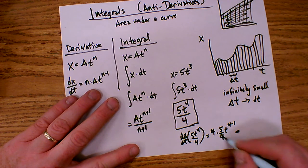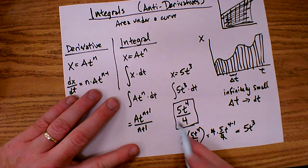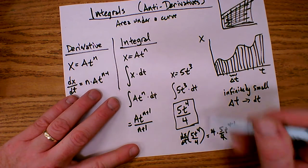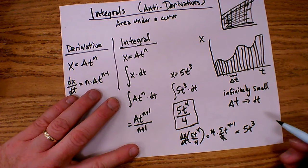I do get, in fact, the fours cancel, and I get 5t to the third. So you can see that this is, in fact, the integral, because when I do the derivative, the inverse process, I get back to the original function x.